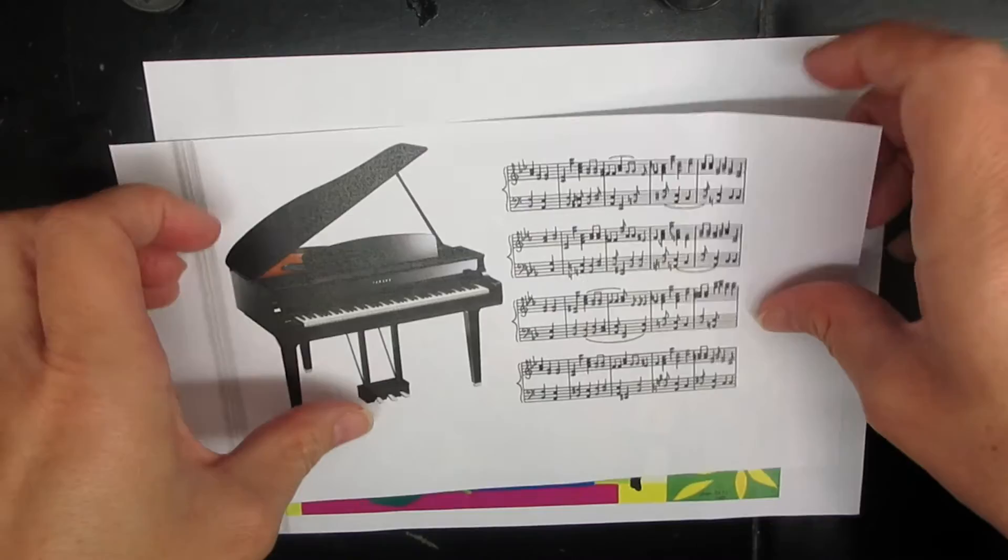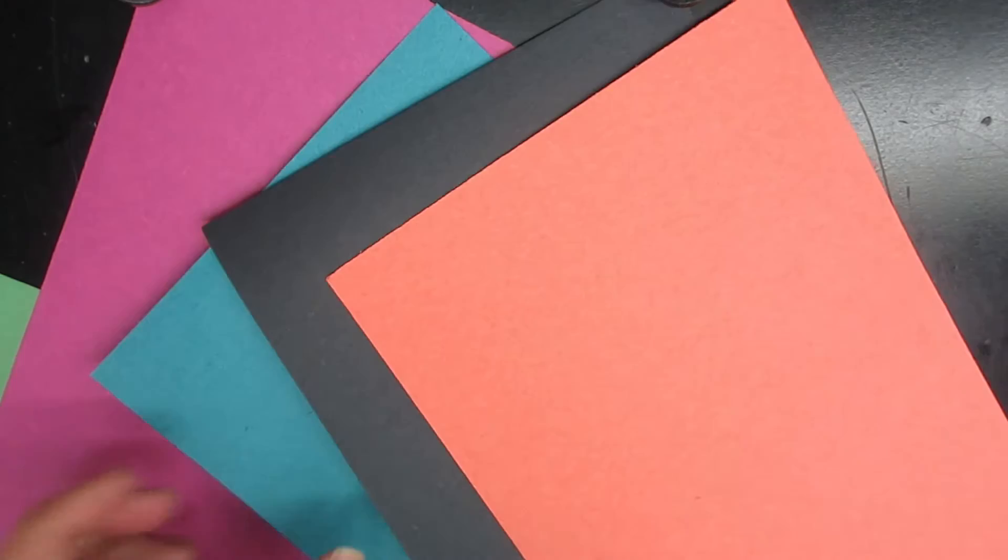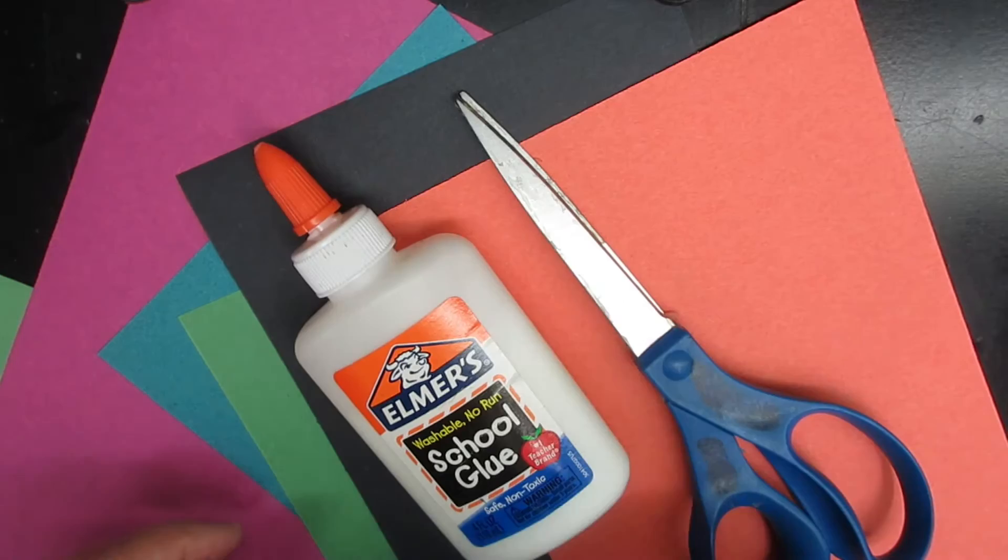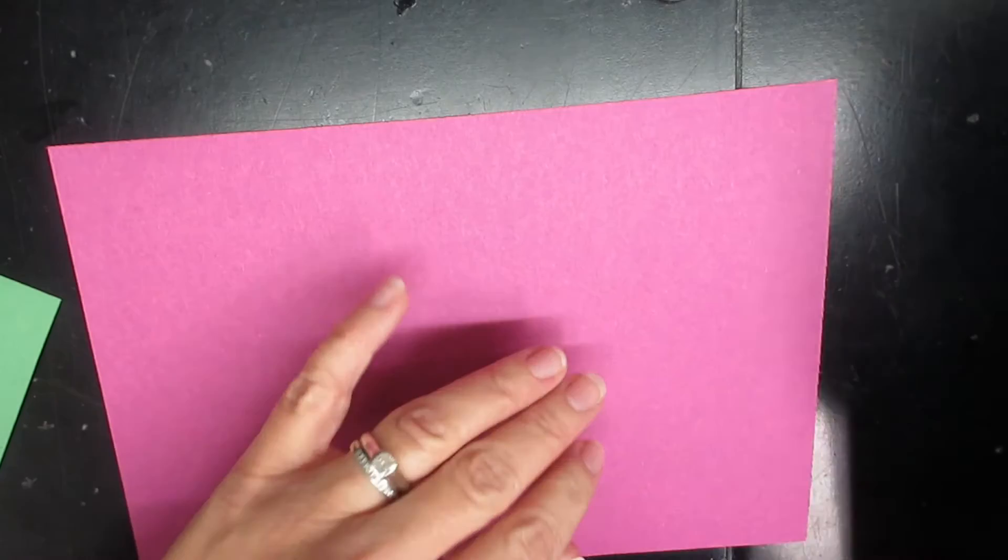You are going to use the colored construction paper from your art packet, probably looks something like this stuff right here. You are also going to need glue and a pair of scissors, and that's it. The first thing you're going to do is choose one of your pieces of paper to be your base paper. So I'm going to use this one as my base paper right here.